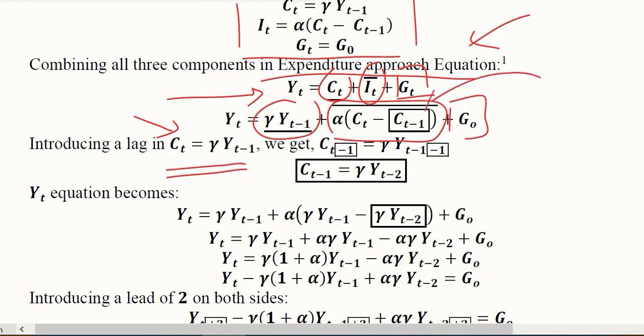We know that in difference equations we can develop any lag or lead term. Using this value I can simply create CT minus 1, and for that I need to introduce minus 1 here so that it becomes CT minus 1. On the right hand side I have to introduce minus 1 in the subscript, so it became T minus 2.